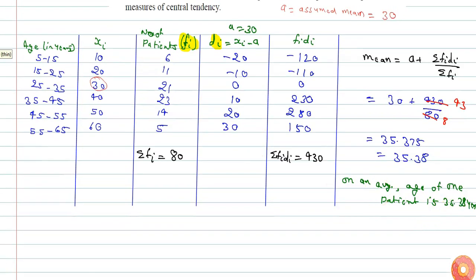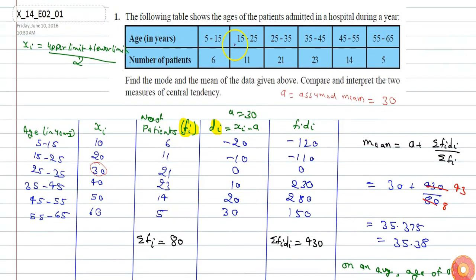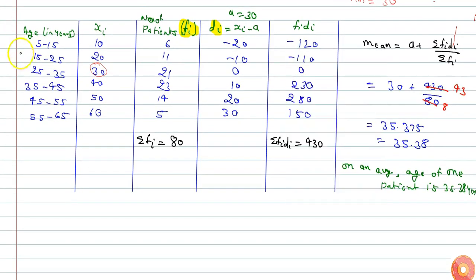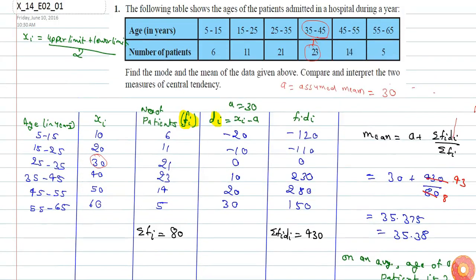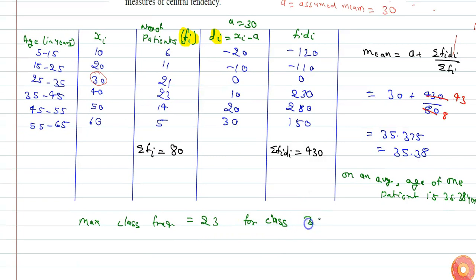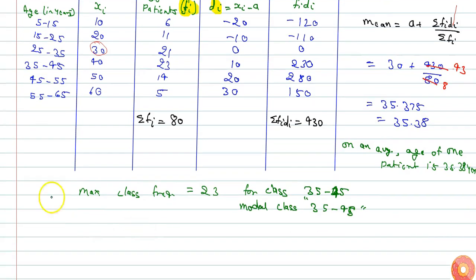Now we shall calculate the mode of the given data. We can see that the maximum number of patients are in the age group 35 to 45. The maximum class frequency is 23, for the class 35 to 45 years. So the modal class is 35 to 45 years.